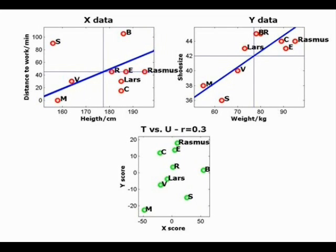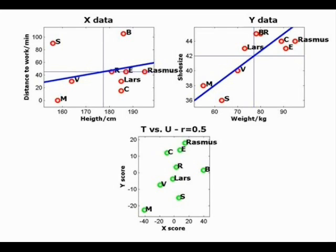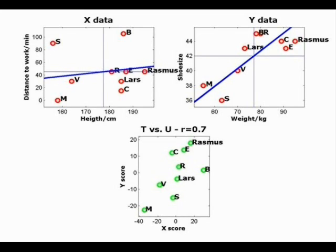You can see, especially in X, the model is really rotating the loading a lot. And in the lower plot, you can see that when you rotate the loading, the scores will change correspondingly. If you look at the correlation in the title of the lower plot, you can see that the correlation between T and U is increasing as the loading changes.